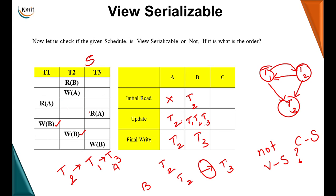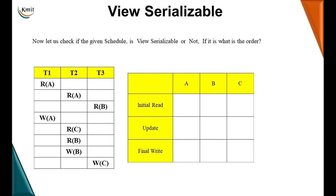Following the order T2 → T1 → T3 gives a view equivalent serial schedule. All actions of T2 are performed first, followed by T1, then T3. Rearranging the operations accordingly, when we execute this order and draw the precedence graph, there will be no loop, confirming it is view serializable.